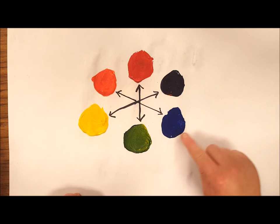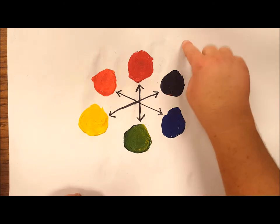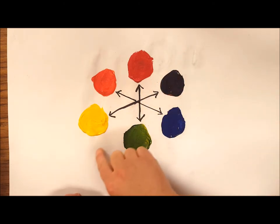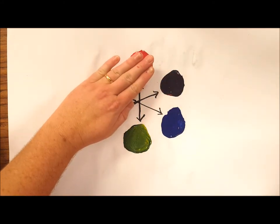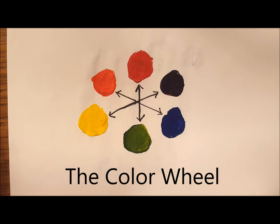So those are purple, blue, and green. We can draw a line diagonally through the color wheel to separate warm colors from cool colors. And there we have the color wheel.